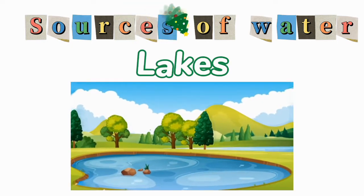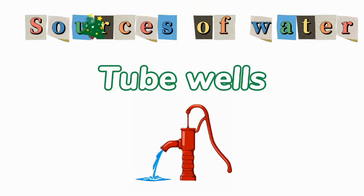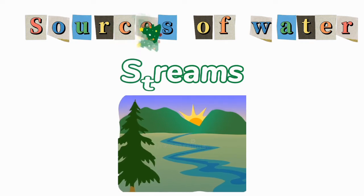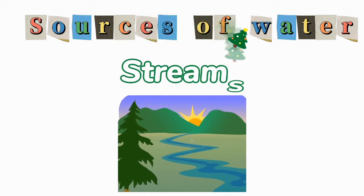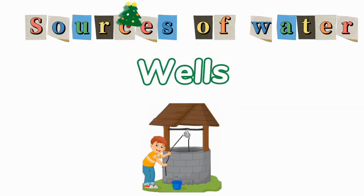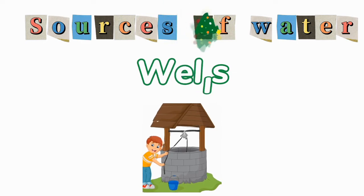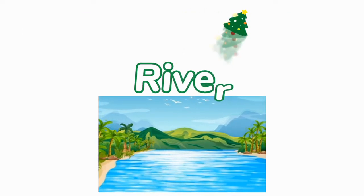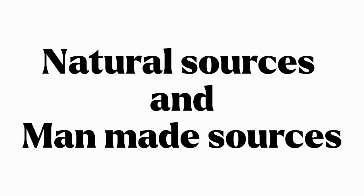Now let's see the sources of water. Water is a precious natural resource. We get water from lakes, tube wells, streams, ponds, well and rivers. Natural sources and man-made sources are the two important sources of water.